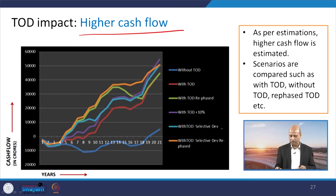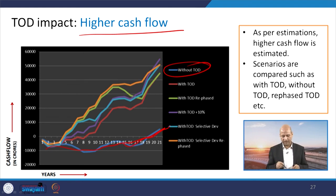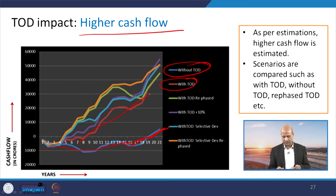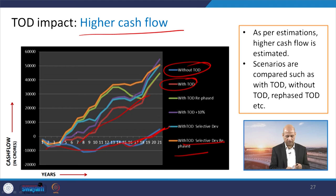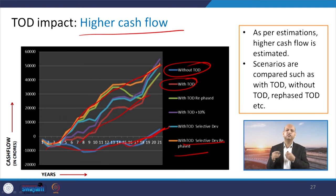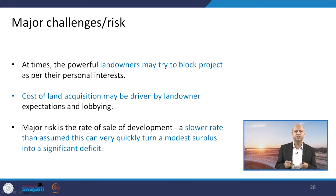Regarding cash flow, without TOD the growth was relatively modest. With TOD, cash flow increases significantly. A further scenario of TOD with selective development rephased showed even greater returns. Different scenarios were estimated and the cash flow was projected to increase tremendously, demonstrating the great economic benefits of TOD-related development.